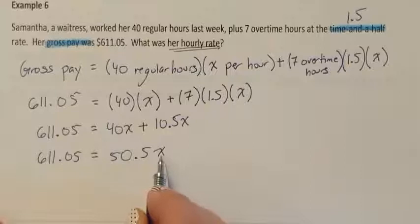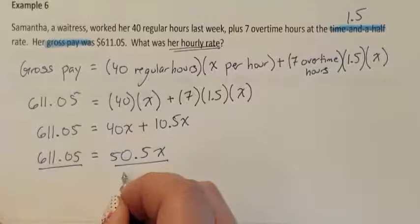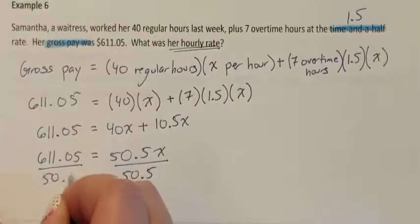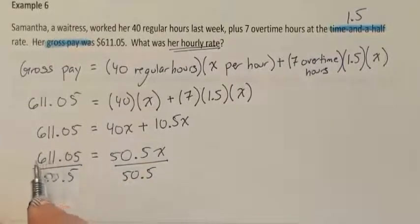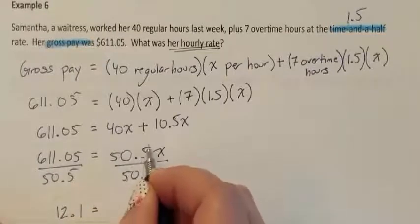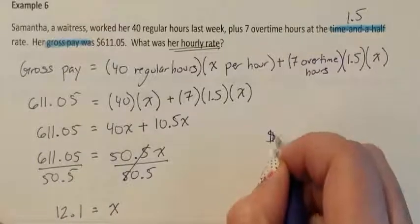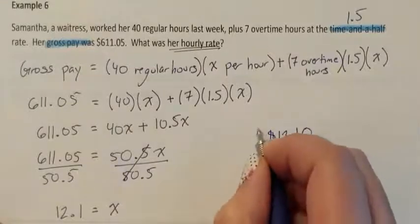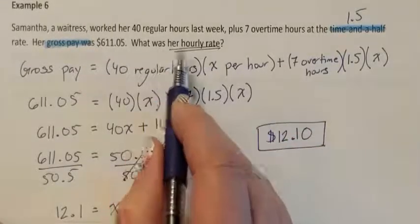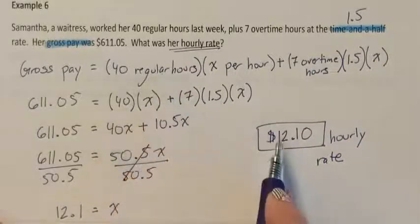I need X by itself. Since 50.5 is connected by multiplication, undo it by dividing both sides by 50.5. On my calculator, 611.05 divided by 50.5 gives me 12.1. So X equals $12.10. That means her hourly rate is $12.10 — she makes $12.10 for every regular hour worked.